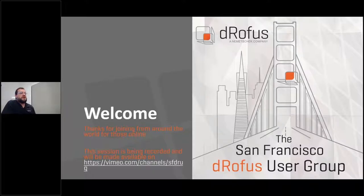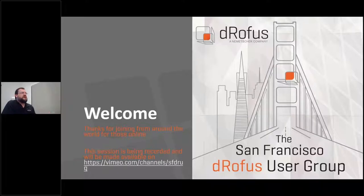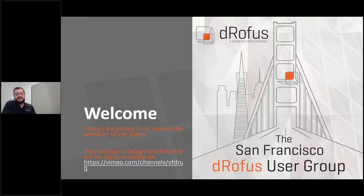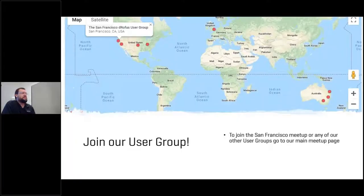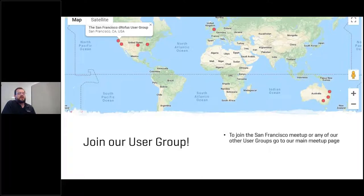We had our first meeting a few years ago at the WeWork where I was working. The user group has grown a lot over time — it tends to fluctuate when the economy fluctuates. Everyone is really busy right now, so there's less participation, whereas when it's slower people tend to have more flexibility. Our user groups are around the world, so if you're traveling you can look them up on Meetup.